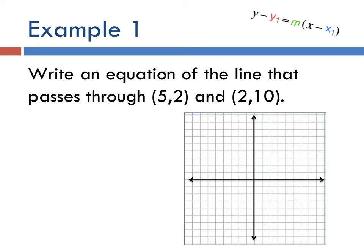In the first example, write an equation of the line that passes through the point 5 comma 2 and the point 2 comma 10. So what's the first thing we could do?